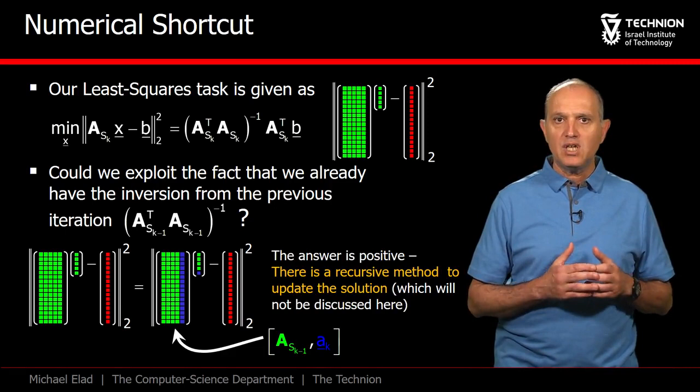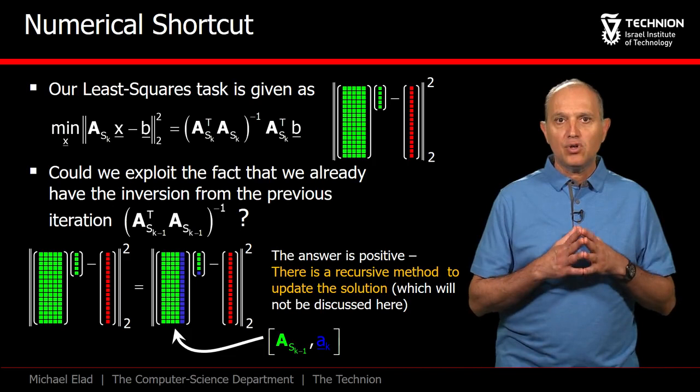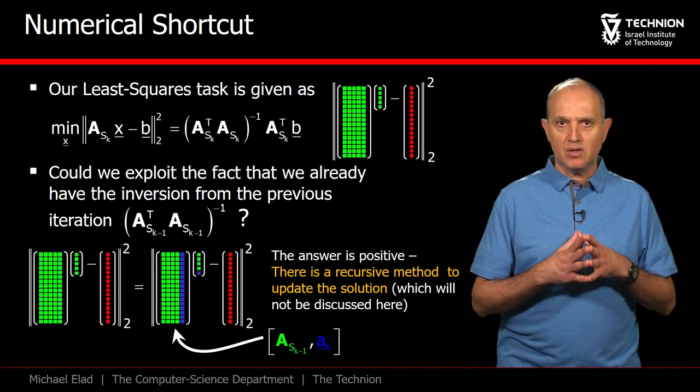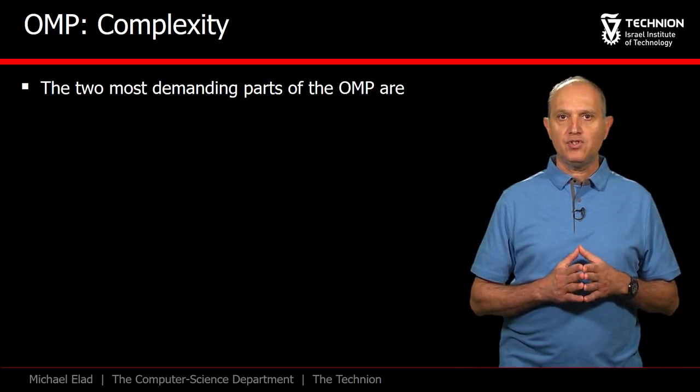There is a recursive method for solving sequence of growingly squares problems of this form exactly, which implies that we do not need to invert any matrix in the OMP. We will not discuss this numerical shortcut further here.